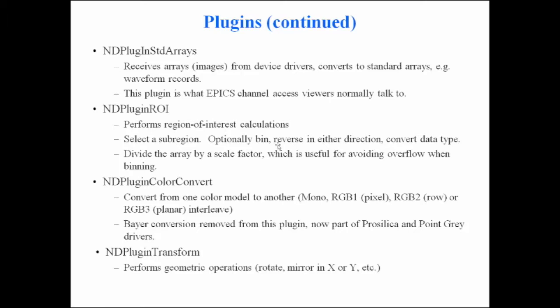There's a color conversion plugin that can convert from one color model to another — for example, converting from mono to RGB1 or vice versa. It used to be able to do conversion from Bayer color to RGB, but I no longer have public domain code for that. I do have code in the ProSilica library and in the Point Grey library that does that conversion, so now it's done in those camera drivers.